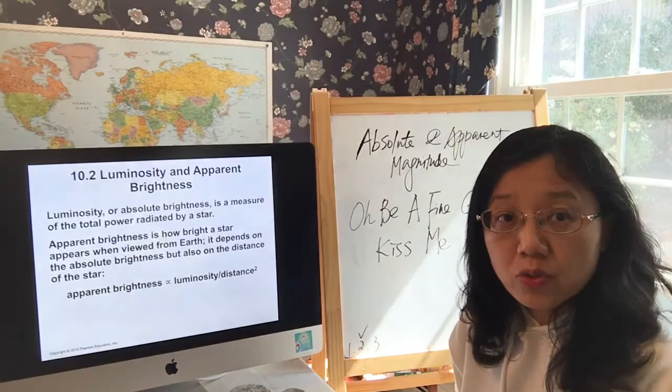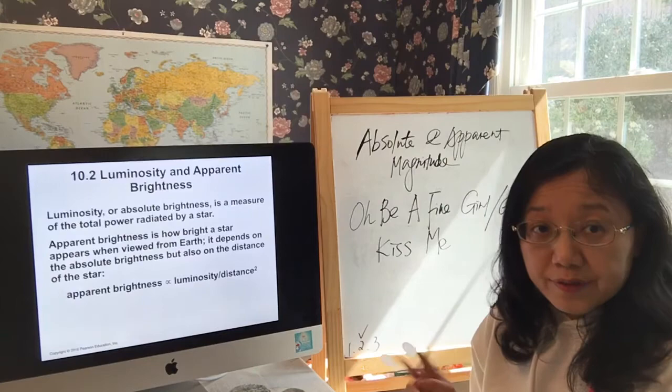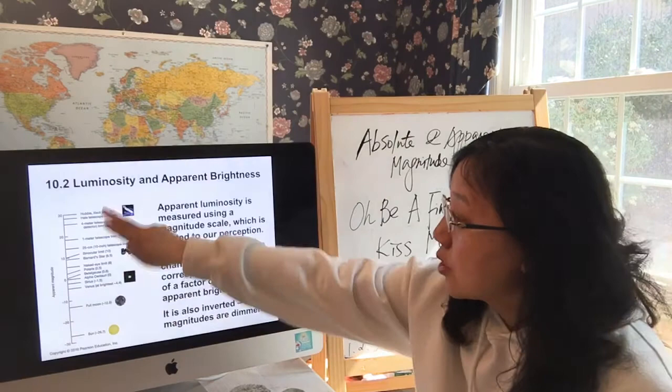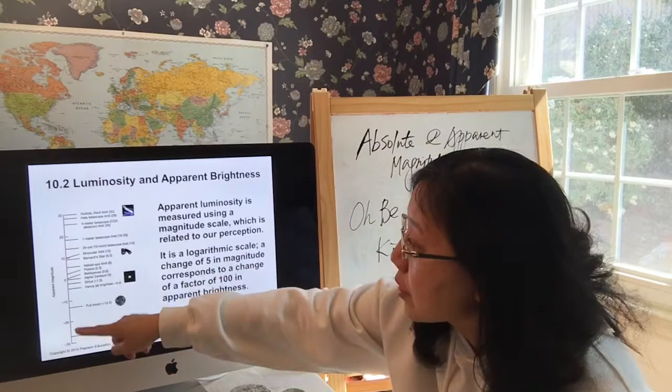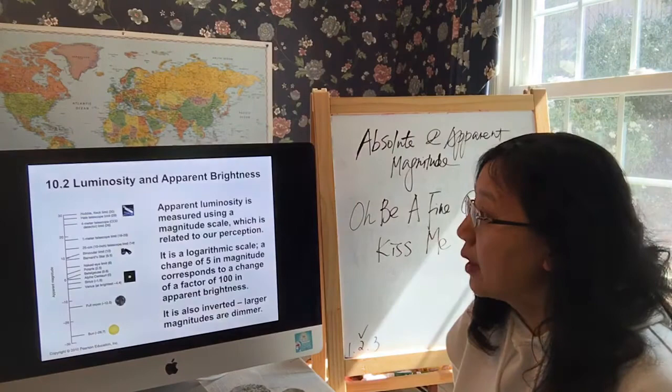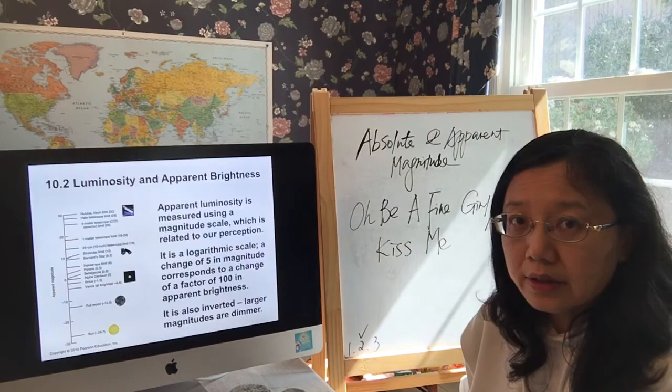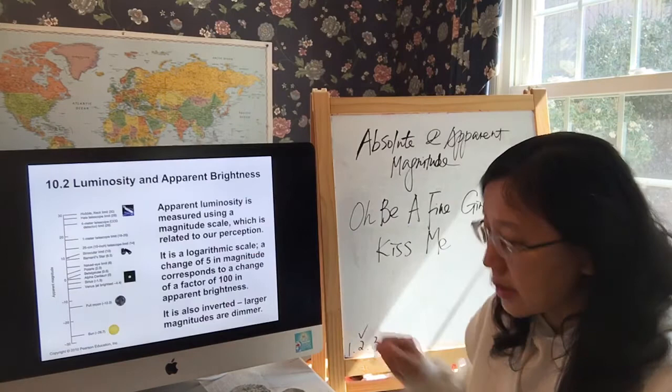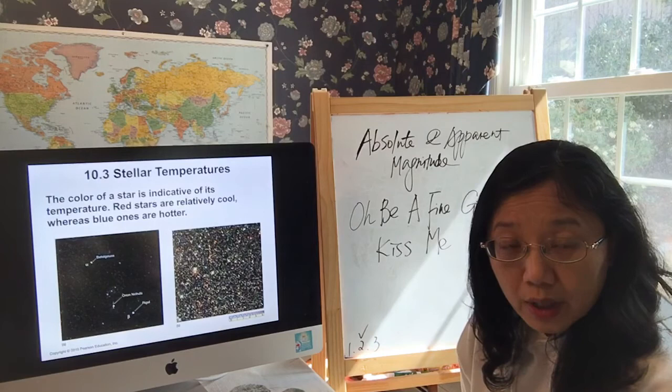Apparent magnitude is how bright a star appears to us from Earth's point of view — those are two very different concepts. In astronomy we use numbers to represent those two types of magnitudes. The Sun's apparent magnitude is negative 26.7, and the smaller the number, the brighter the object. That's how astronomers represent apparent brightness.